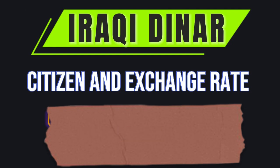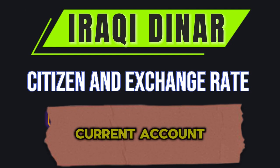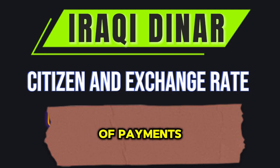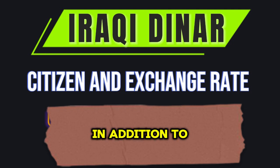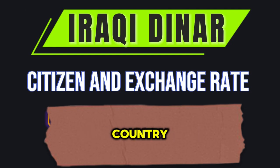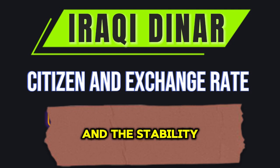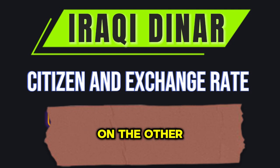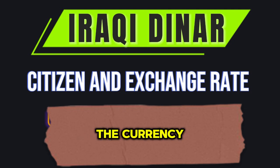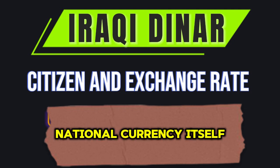Currency stability is linked to the stability of the current account of the balance of payments, especially in the long term, in addition to the stability of foreign reserves in the central bank of the country, which strengthens the strength of the Iraqi dinar and the stability of the exchange rate.